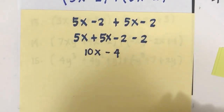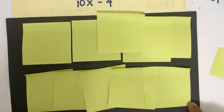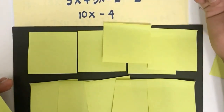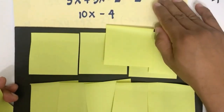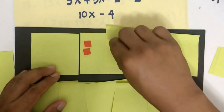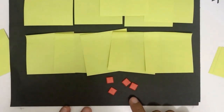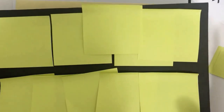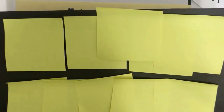Using the associative property, we group 5x and 5x together, then minus 2 and minus 2. 5x plus 5x: these are similar terms, so 5 plus 5 equals 10, giving 10x. Negative 2 and negative 2 together give negative 4. The result is 10x minus 4. You don't make it x squared because you are not multiplying — you are counting how many x's there are, and there are 10.